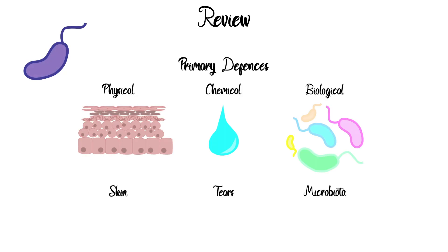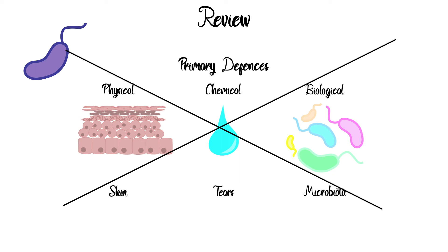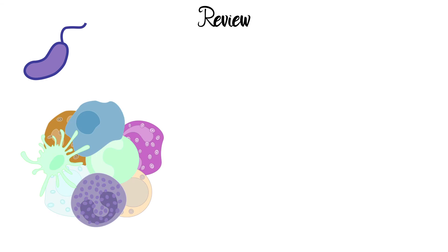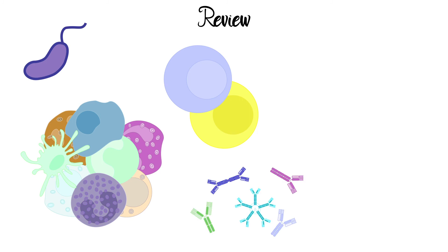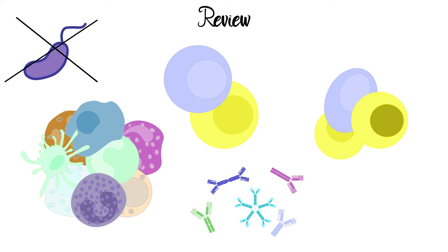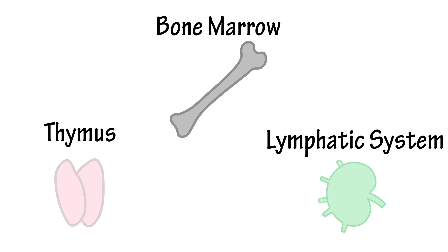Just to recap: the body has primary defences against potentially harmful pathogens. If these defences are breached, immune cells coordinate the response. The innate response is non-specific and quick, and can lead to the adaptive response, which is tailored to the pathogen but takes longer. This can lead to the formation of memory cells, where upon infection by the same pathogen the response is quicker and more efficient. The main parts of the body relevant to the immune response are the thymus, bone marrow, and lymphatic system.